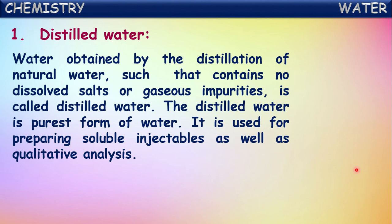But in its journey through the air, rain water again dissolves impurities and some gases. Rain water is naturally relatively pure, but distilled water is the purest form and is manmade - purified by humans.